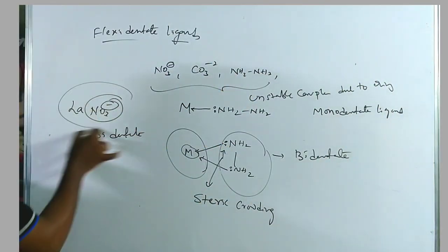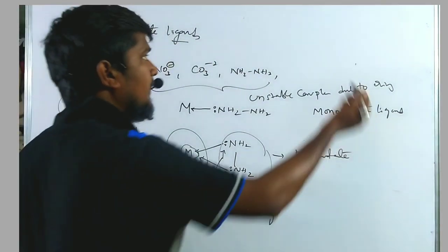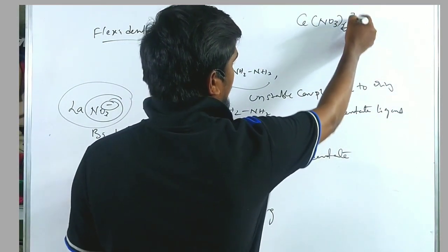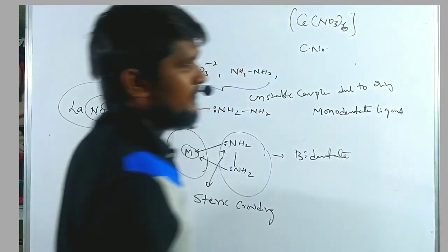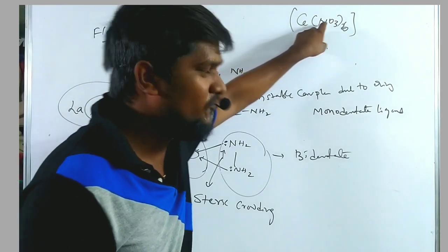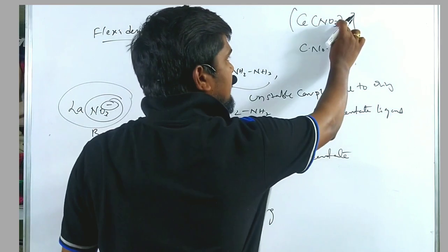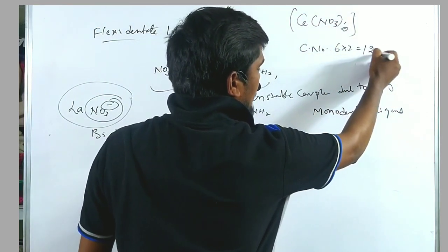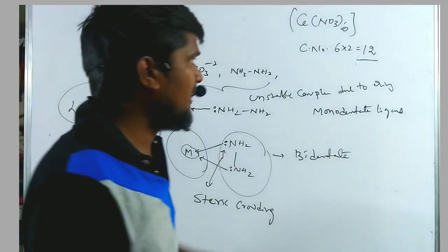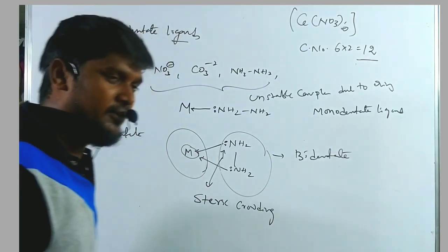In case of lanthanoids or actinoids, it acts as bidentate ligands. The best example is from the previous GATE question: coordination number of cerium (a lanthanoid) with NO₃⁻ acting as bidentate — so 6 × 2 = 12, the coordination number is 12, not 6. Be careful about the metal adjacent to the ligand, as this is also a very important point. Transition elements can act as only monodentate, but in case of lanthanoid elements, these ligands act as bidentate.